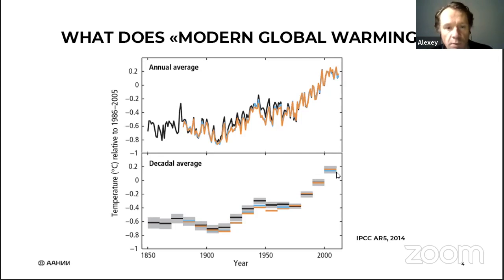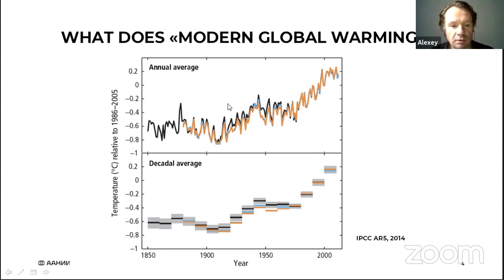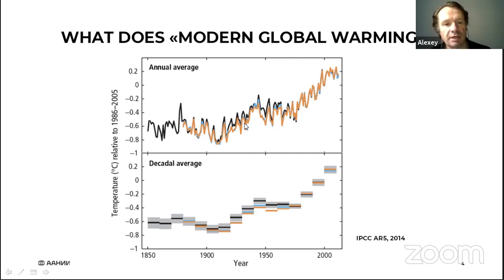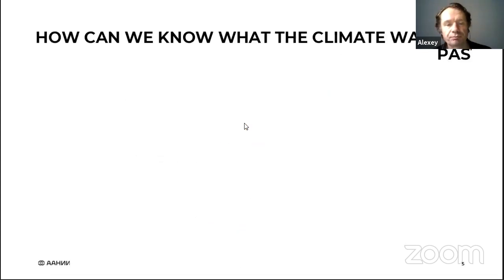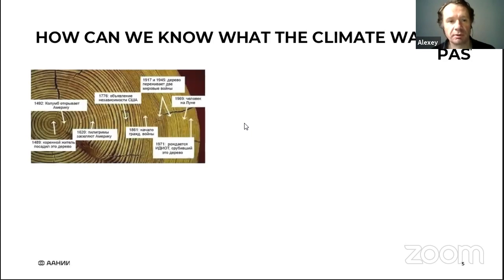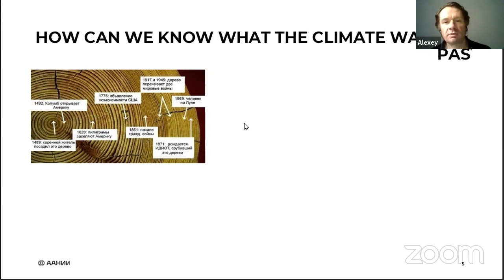To understand what is going on now, we need to know what happened in the past, especially before instrumental observations which started only around the middle of the 19th century. For this we use the scientific field called paleogeography — the science about past climates and past environmental situations.